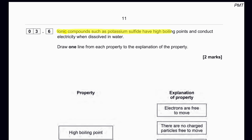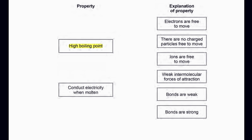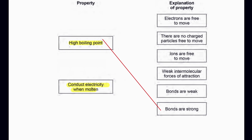Ionic compounds such as potassium sulfide have high boiling points and conduct electricity when dissolved in water. High boiling point: the ionic bonds between cations and anions are very strong, so the bonds are strong. Conducts electricity when dissolved: as in sodium chloride, the sodium and chloride ions are free to move when dissolved, so ions are free to move and they can conduct electricity.